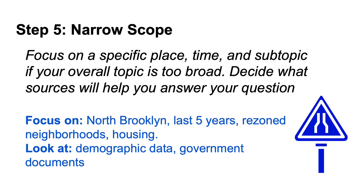Step 5: Now that you have more context, you can narrow the scope of what you want to research. Thinking about how your broader topic intersects with a specific place, time, or community is a good way to narrow down. You can also start to think about the kinds of research that you want to include and where you might find those sources.